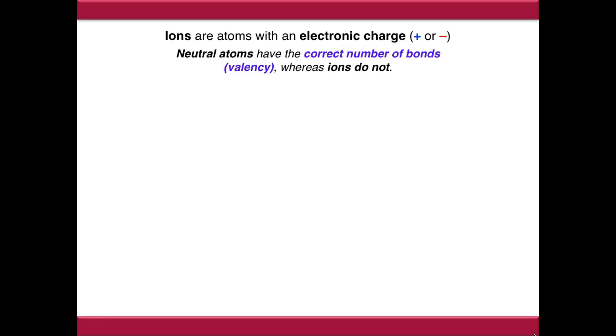Ions are atoms which contain an electronic charge, and the reason they have an electronic charge is because there is some discrepancy with the number of bonds that they're making. Neutral atoms have what I've called the correct number of bonds, or the correct valency.